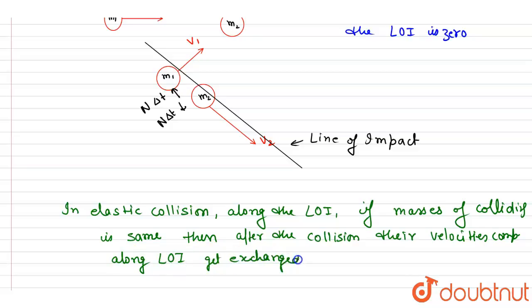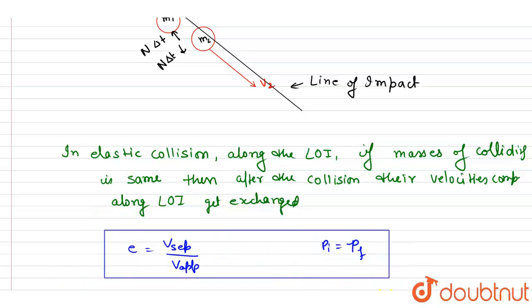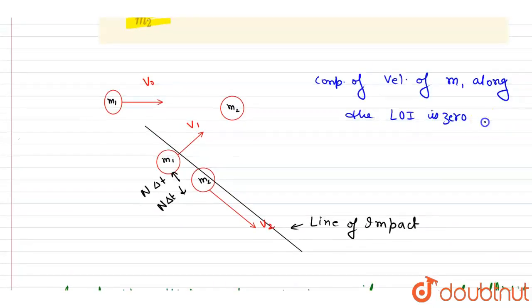You can verify the same by writing the e equation and the momentum conservation equation. Along the line of impact, if the masses of the colliding bodies are the same, then after the collision their velocity components along the line of impact get exchanged. So the velocity can only get exchanged when the masses are equal.